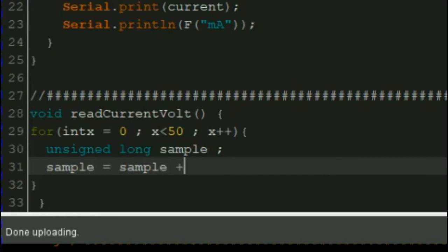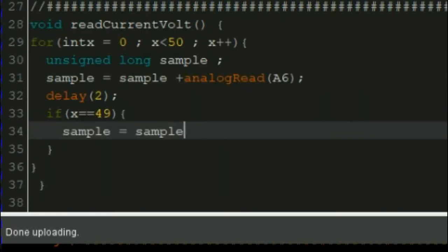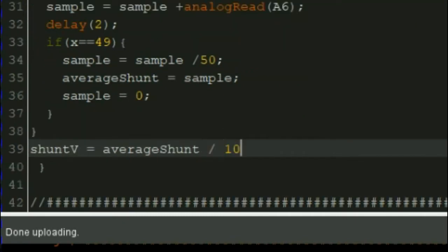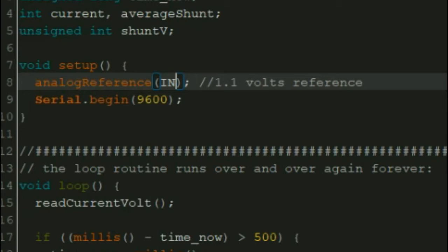In the code, we analog read it many times and then average it to lessen the noise. And then after that, basically, we just use this formula to convert the analog read to millivolts reading. This here is 1100 millivolts because on the void setup section, we will set the analog reference to internal, which is 1.1 volts.